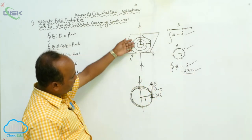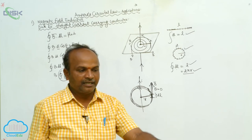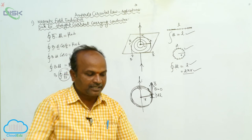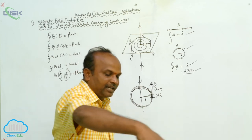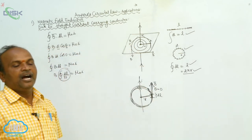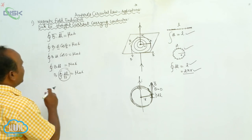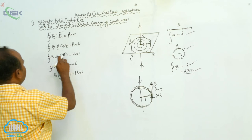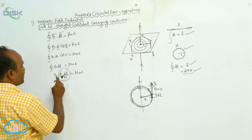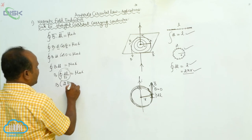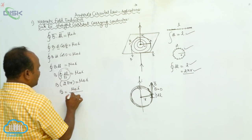This is the current carrying conductor, and r is the perpendicular distance. By considering r as the radius, draw a circle — this circle is called the arbitrary path. Along this arbitrary path, I am calculating the line integral of B̄·dL̄. So B·dL·cos0 = μ₀I, giving B·dL = μ₀I. Therefore B·∮dL = B·2πr = μ₀I, so B = μ₀I / 2πr.